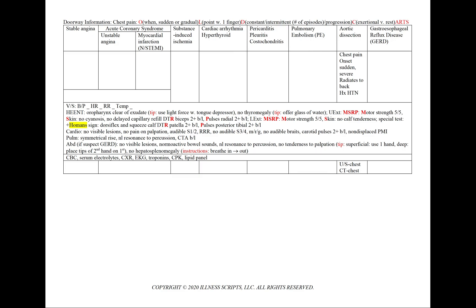In aortic stenosis, the supporting points include chest pain with a sudden onset that's severe, radiating to the back, and a history of uncontrolled hypertension. We'll add an ultrasound and CT of the chest.